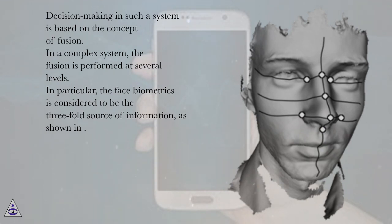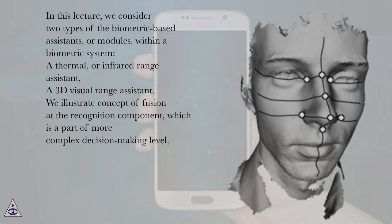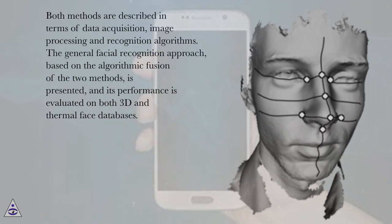In particular, the face biometrics is considered to be the three-fold source of information, as shown in. In this lecture, we consider two types of the biometric-based assistants, or modules, within a biometric system: a thermal, or infrared range assistant, and a 3D visual range assistant. We illustrate the concept of fusion at the recognition component, which is a part of a more complex decision-making level. Both methods are described in terms of data acquisition, image processing, and recognition algorithms. The general facial recognition approach, based on the algorithmic fusion of the two methods, is presented, and its performance is evaluated on both 3D and thermal face databases.